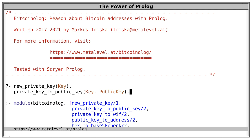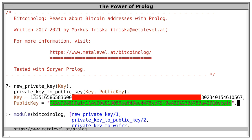Once we have a private key, we can use the predicate private_key_to_public_key to derive the public key that corresponds to this private key. With elliptic curve signatures, a public key is a point on an elliptic curve, which is represented as a string here. And we can share the public key with everyone.